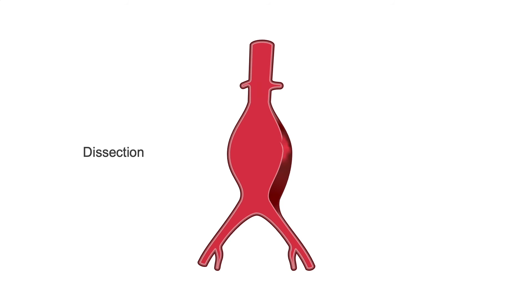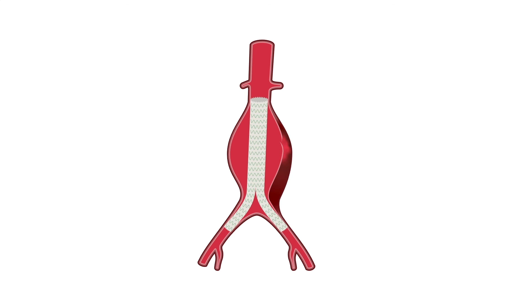Also try to determine the extent of the dissection — for example, if it begins in the aorta, does it affect the iliac arteries as well? An endograft or stent is typically used to treat abdominal dissection, and it can be used in conjunction with the abdominal aortic aneurysm endograft surgery.